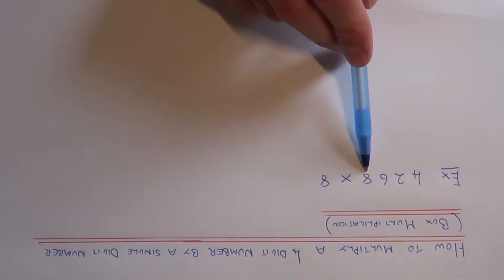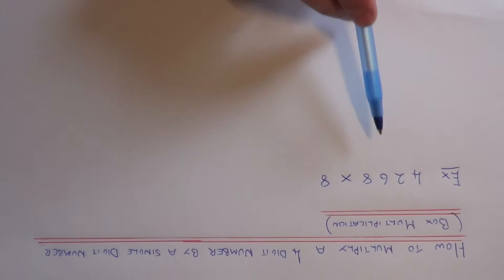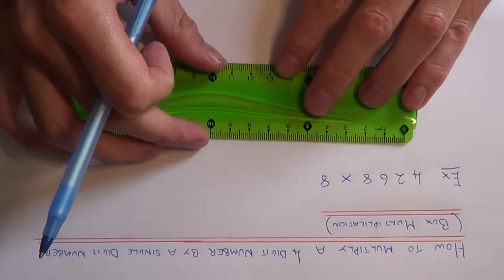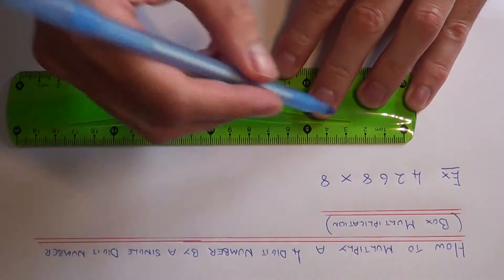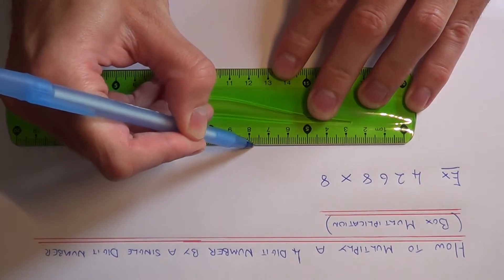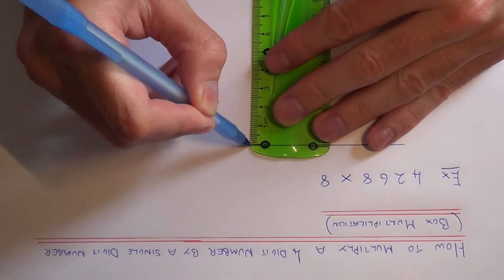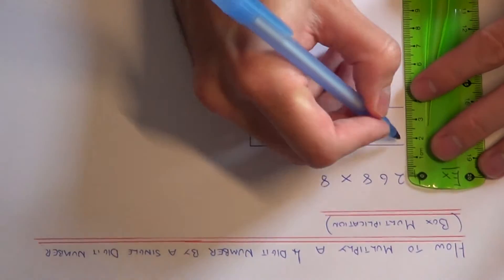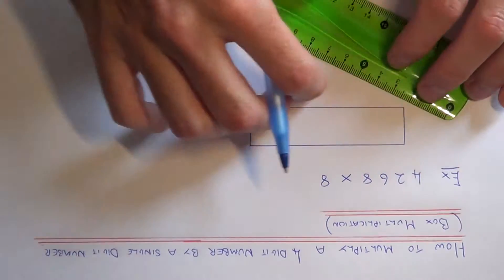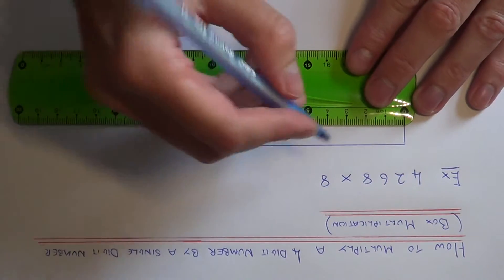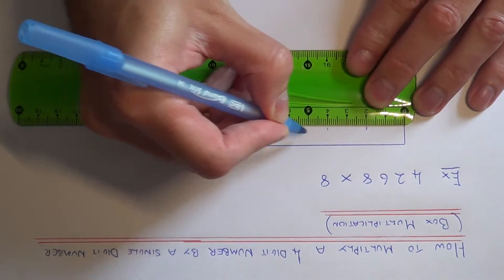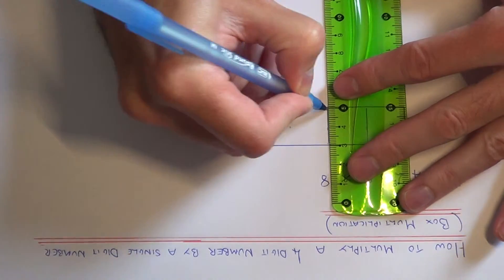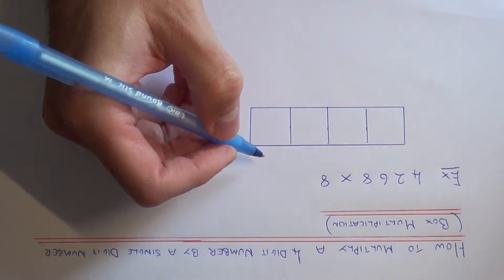Since we have a four digit number, we need to draw four boxes on our page. So if we just split this up into four, there we go.